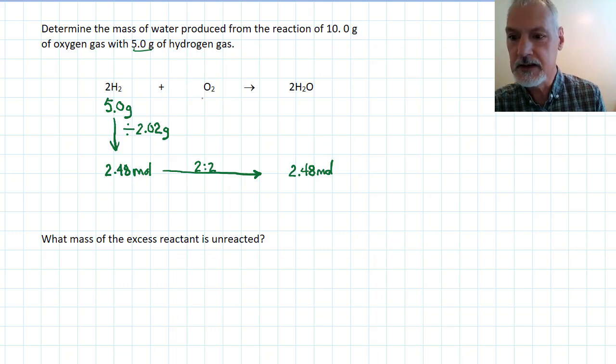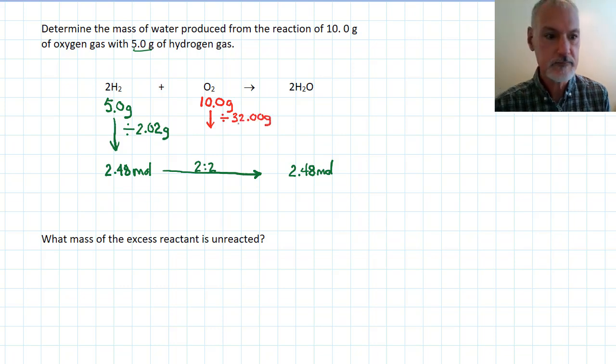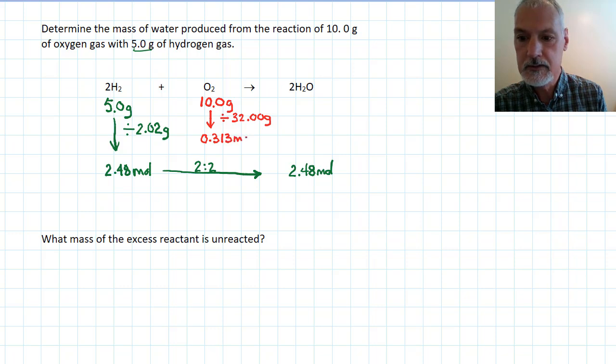Now I'm going to repeat this calculation by looking at the oxygen. I have 10 grams of oxygen. I'm going to take that and convert it into moles by dividing by the molar mass of O2 which is 32 grams per mole. That division gives me 0.313 moles. Now the ratio that exists between oxygen and my water, the ratio is 1 to 2, so I could make 0.626 moles.